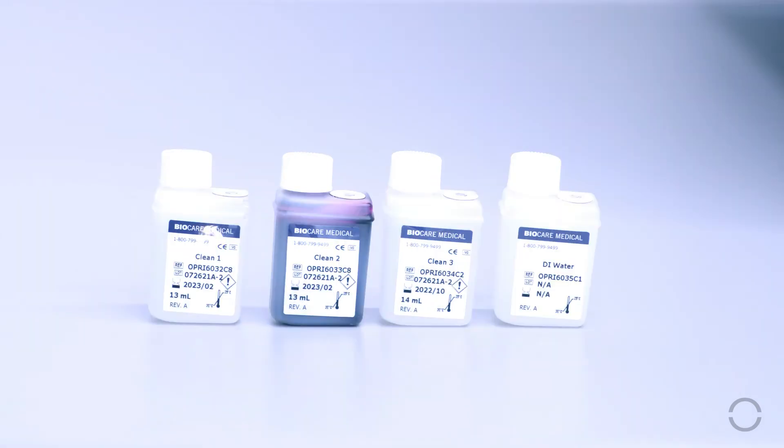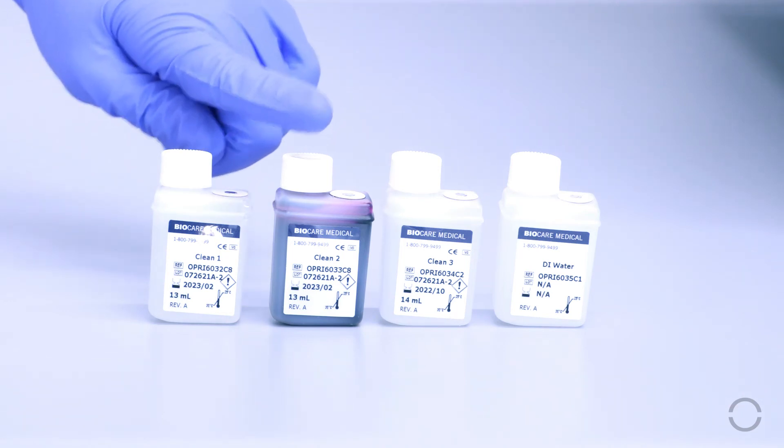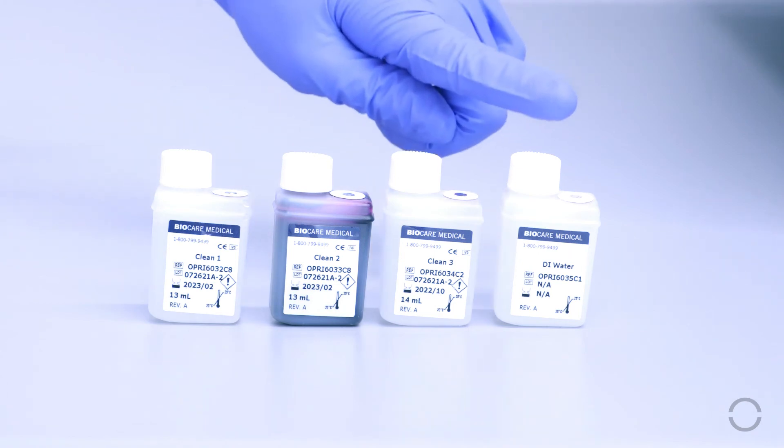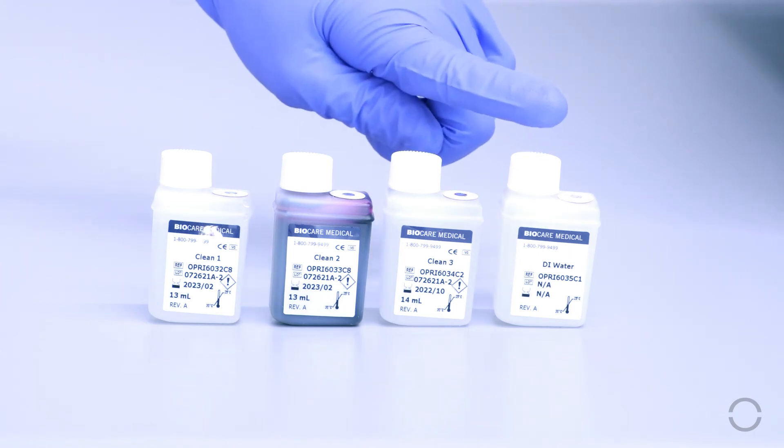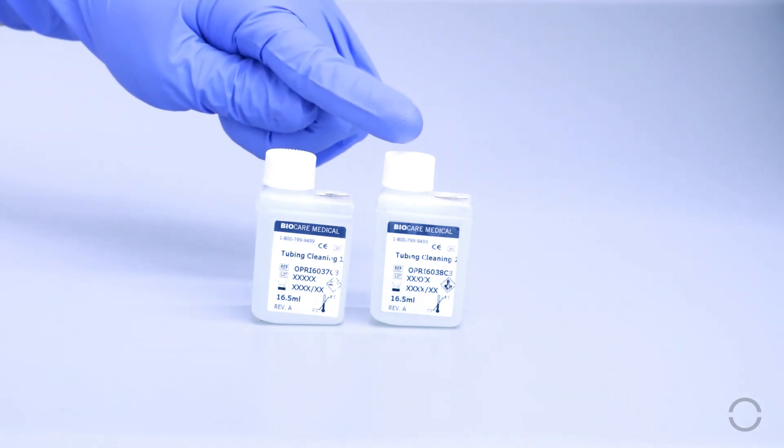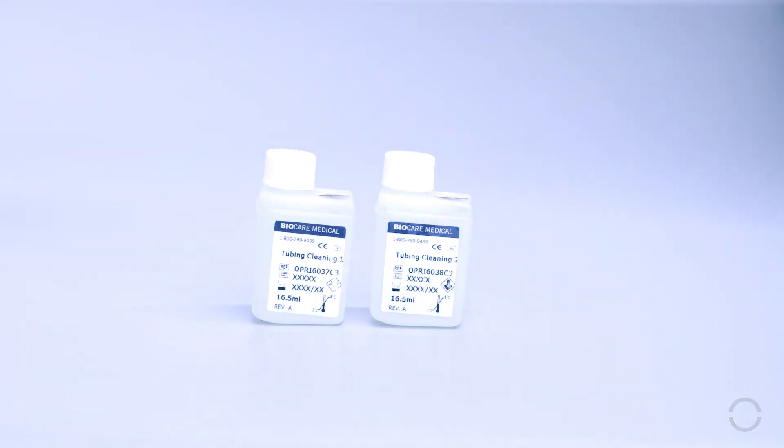The Encore Pro chamber cleaning kit consists of three solutions plus an empty DI water vial for removing DAB residue and cleaning instrument surfaces that may have contacted DAB chromogen. The tubing cleaning kit consists of two solutions for removing DAB and wax residues in the reagent and waste tubing.